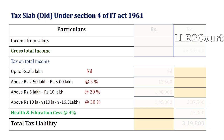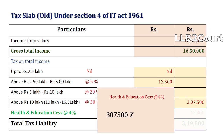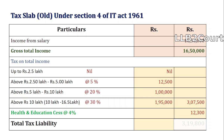Filling the table: income from salaries is 16 lakh 50,000. The tax for each slab — 12,500, 1 lakh, and 1 lakh 95,000 — totals 3 lakh 7,500. Finally, we calculate the health and education cess at 4%: 3 lakh 7,500 into 4% is 12,300. Adding both, the total comes to 3 lakh 19,800. So Ananya has to pay 3 lakh 19,800 as tax for 16 lakh 50,000 under the old regime — this is the correct calculation.